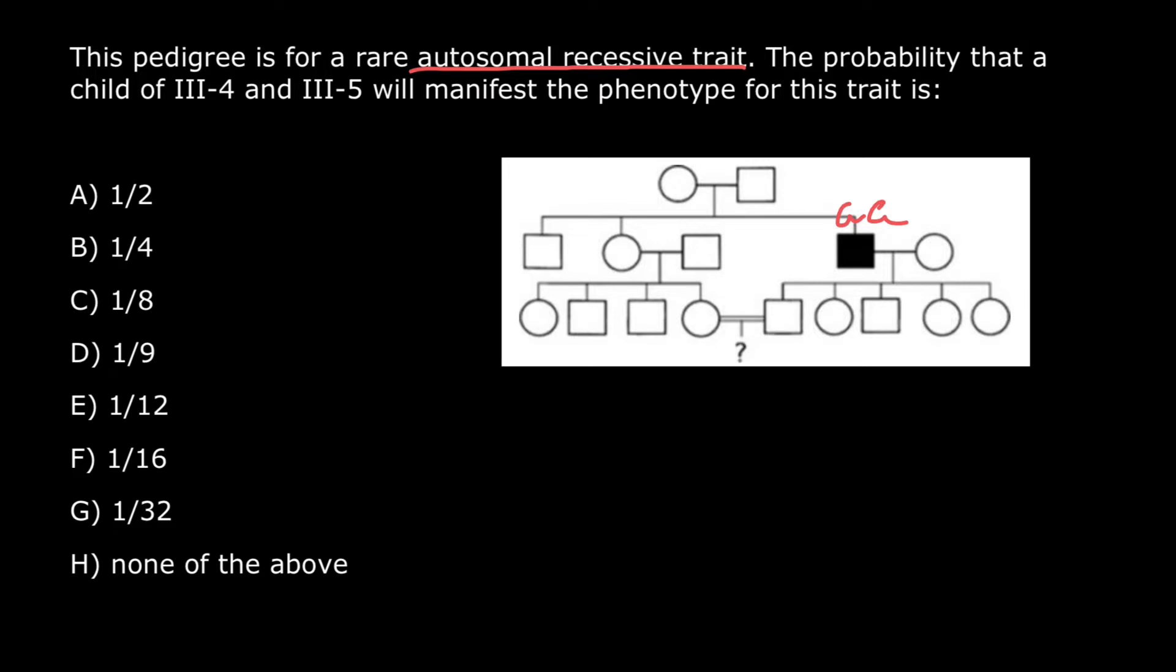And that tells us that the genotype of his parents have to be capital A and small a, because the phenotype is normal, but they have an affected child with two recessive alleles. That means each of them have to have this recessive allele to pass to their son.